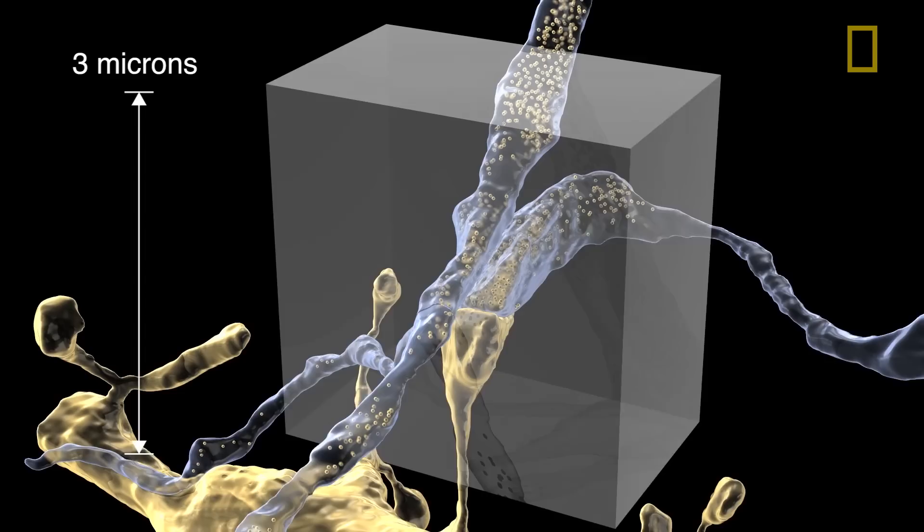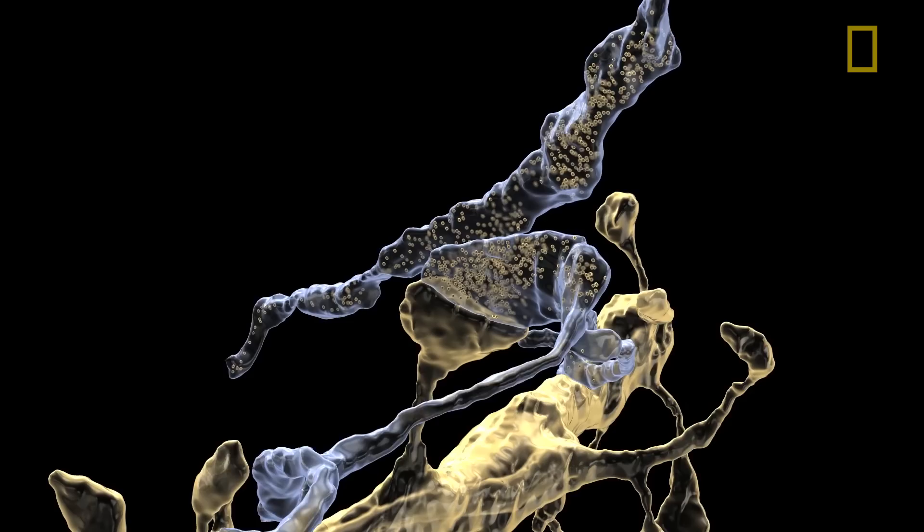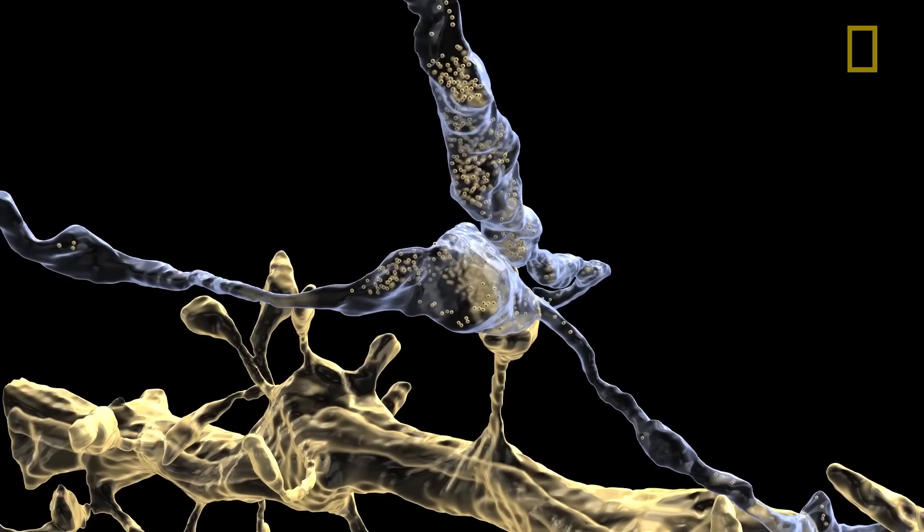We're going to zoom up by another factor of three in this box. Now we finally see the places where the axons of some cells are beginning to communicate with the dendrites of other cells. And axons and dendrites talk to each other through synapses.